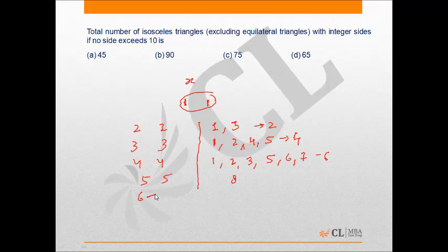From 6 to 10, in each case the values that the unequal side can take will be 9. Therefore, the total number of required triangles will be 2 + 4 + 6 + 8 + 9×5.